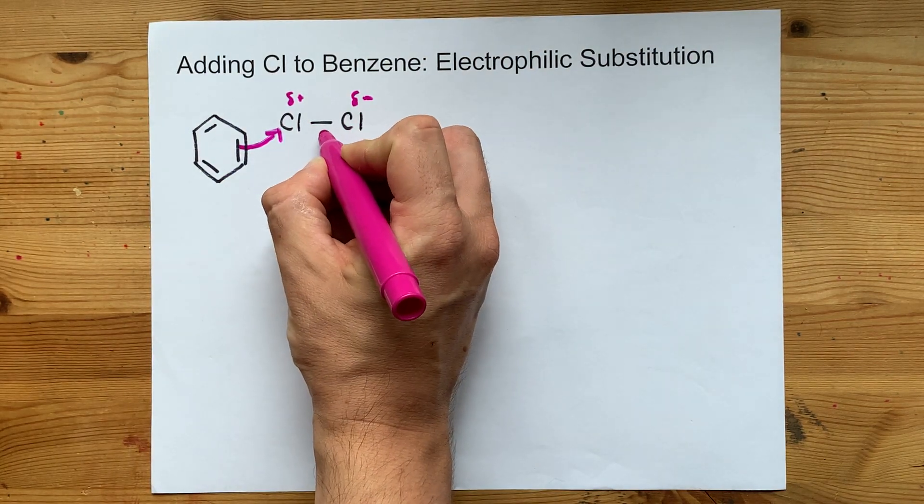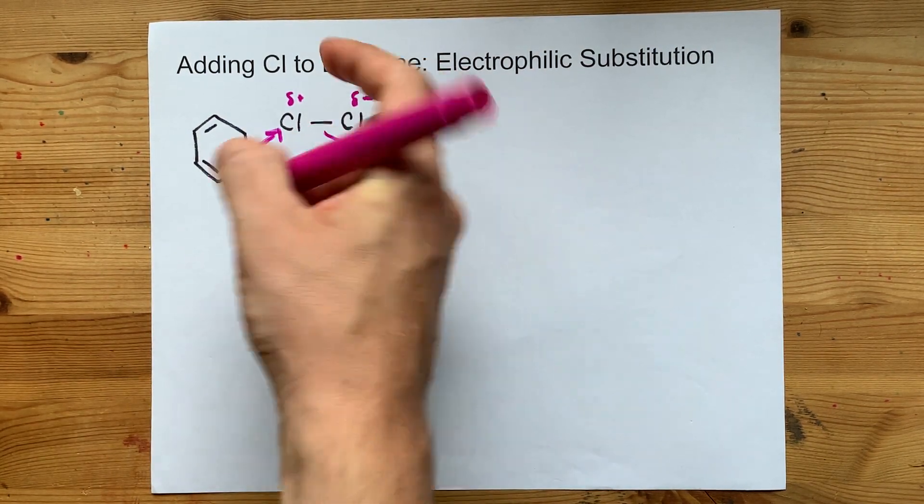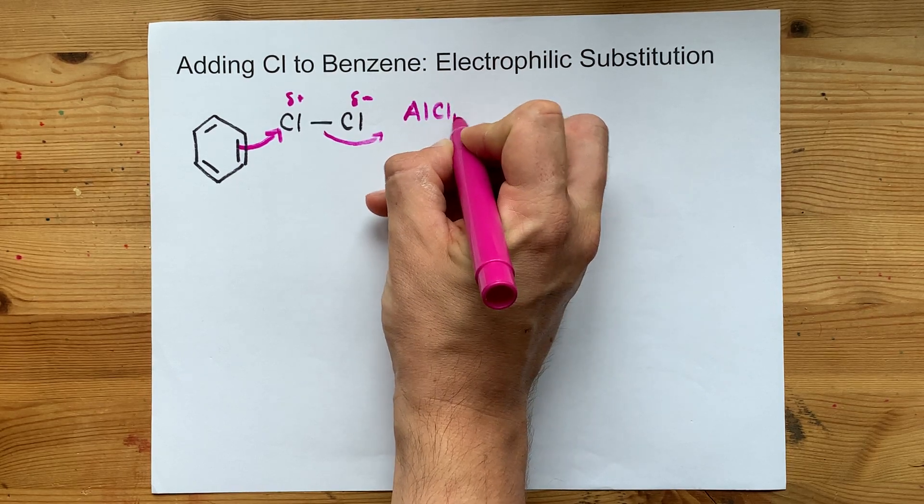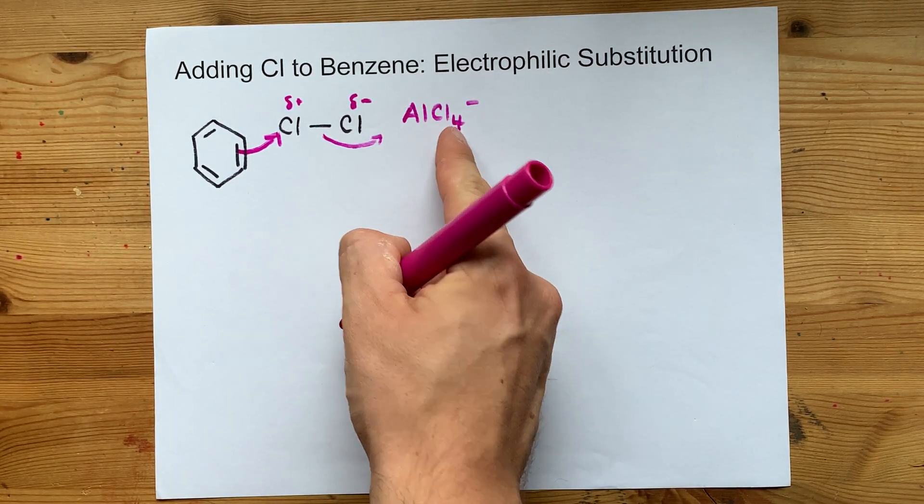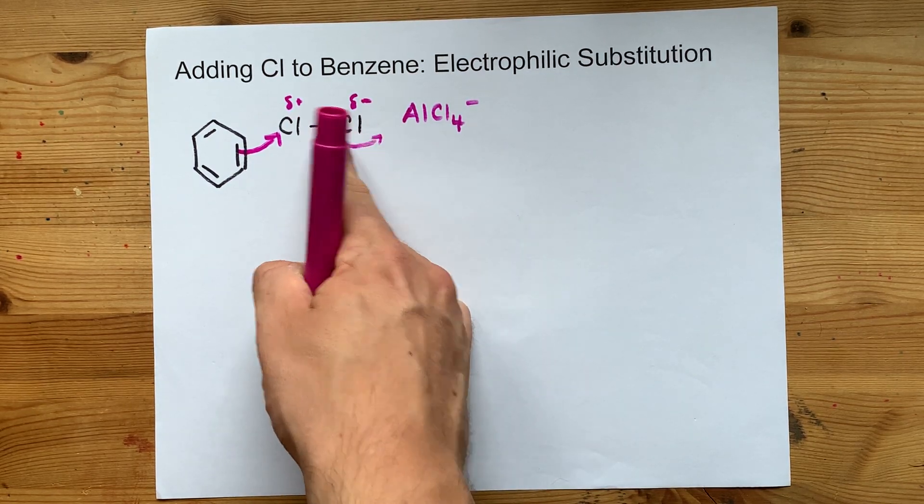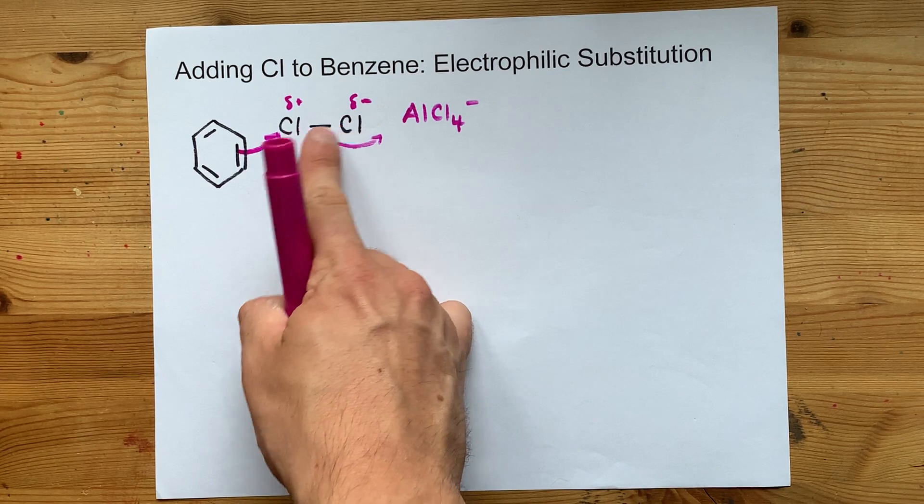The single bond between the two breaks. Most teachers will show that forming AlCl4-. That's AlCl3 along with the extra Cl- that's popping off of this molecule.